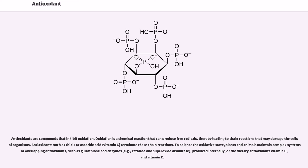Antioxidant. Antioxidants are compounds that inhibit oxidation. Oxidation is a chemical reaction that can produce free radicals, thereby leading to chain reactions that may damage the cells of organisms.